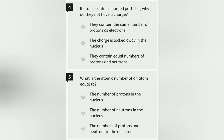Question 4: If atoms contain charged particles, why do they not have a charge? Atoms mein charge particles hote hai, phir bhi us pe charge kyun nahi hota? Agar protons aur electrons — jo ki positive aur negative hain — donon ko equal kar dein, toh woh neutral ho jayega. So the answer is: they contain the same number of protons as electrons.